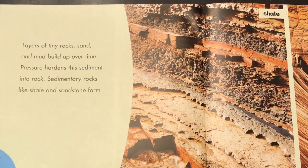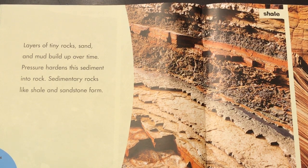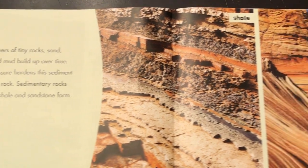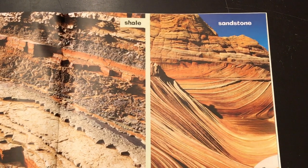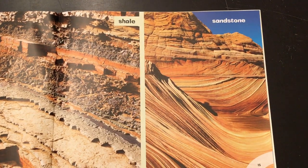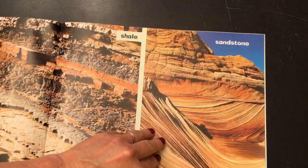Layers of tiny rocks, sand, and mud build up over time. Pressure hardens this sediment into rock. Sedimentary rocks like shale and sandstone form. There's shale. Look at how beautiful that sandstone is — look at all the layers. It's amazing.